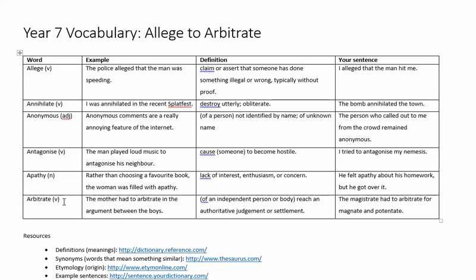And finally, arbitrate, which is like making a judgement or deciding. As in, of an independent person or body, reach an authoritative judgement or settlement. So if you're settling an argument between people, you're arbitrating. The magistrate had to arbitrate for the magnate and the potentate — and potentate means ruler, particularly authoritarian. So hopefully that's been useful to you.